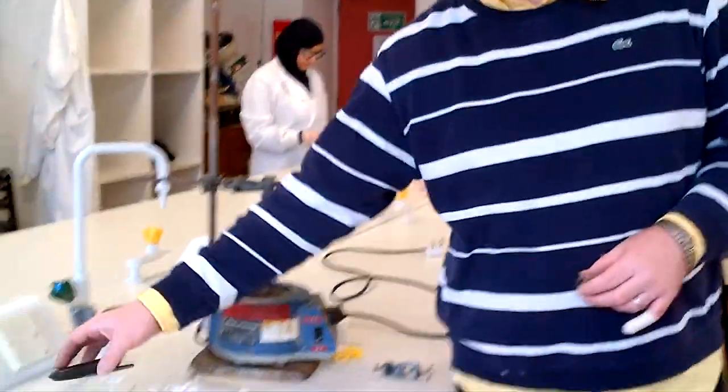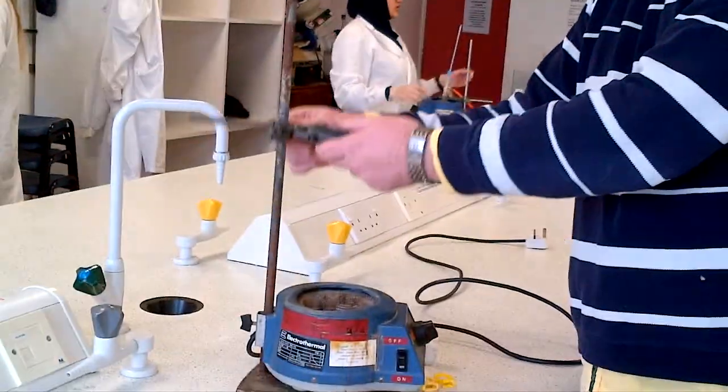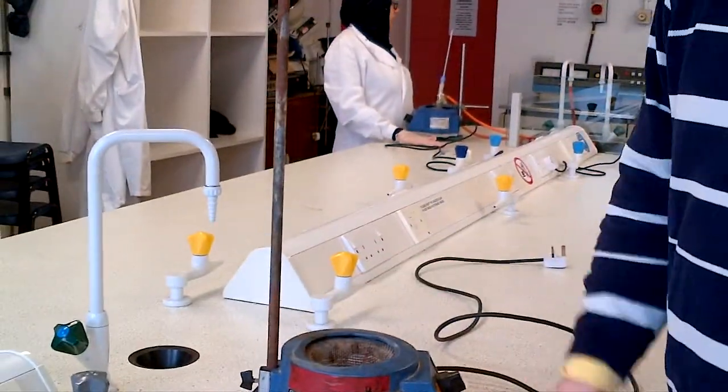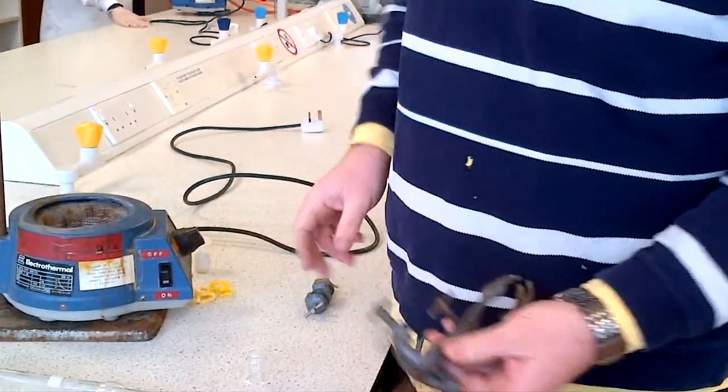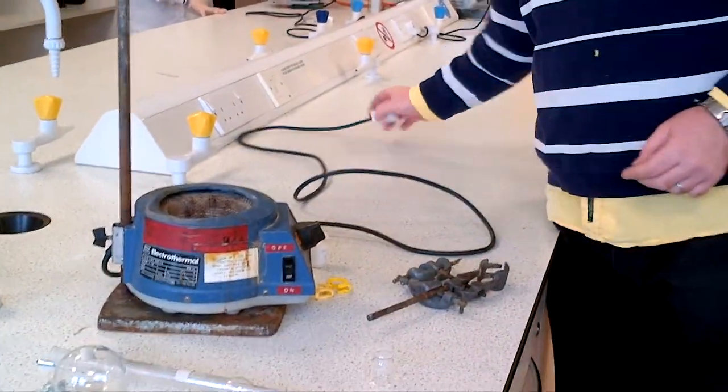This is an example of how to distill. What you would need at this point for distillation is a stand, a boss and clamp, another boss, and a heating mantle.